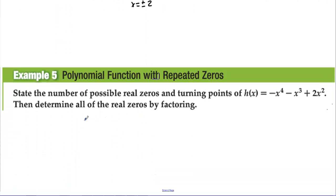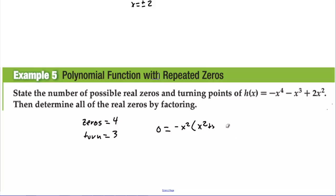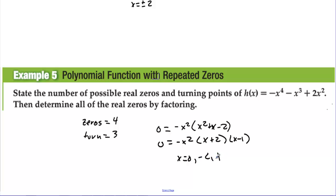For the last function, up to 4 distinct zeros and 3 possible turning points. Factoring out −x² gives −x²(x² + x − 2), and x² + x − 2 factors into (x + 2)(x − 1). So the zeros are x = 0 (with multiplicity 2, since it comes from −x²), x = −2, and x = 1 — three distinct zero values, with 0 counted twice.